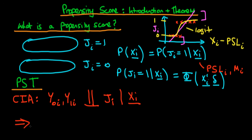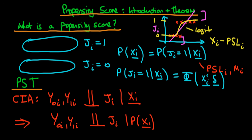A corollary from this, which you can prove quite easily, is that the outcome variables y0i and y1i — the potential levels of the outcome — are themselves independent of Ji, the treatment, if we condition on the propensity of an individual to receive treatment given their covariates. The only difference between the conditional independence assumption and the propensity score theorem is that here we're dealing with a scalar function of those covariates rather than the full high-dimensional list Xi. Xi is highly dimensional, whereas the probability is just a scalar quantity — a value between 0 and 1.